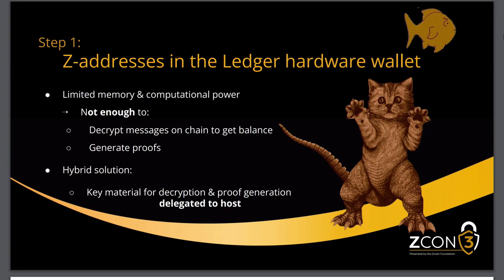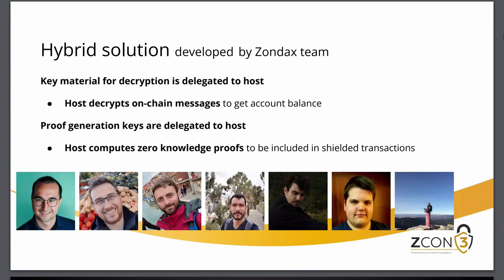To enable shielded transactions on the Ledger, we need to delegate some key material for decryption and proof generation to the host. By delegating decryption keys, the host can decrypt on-chain messages and get the account balance. By delegating proof generation keys, the host can compute the zero-knowledge proofs included in the shielded transactions. Importantly, the host never has access to the signing key that authorizes the spend — the Ledger still verifies the shielded transaction before signing and authorizing.